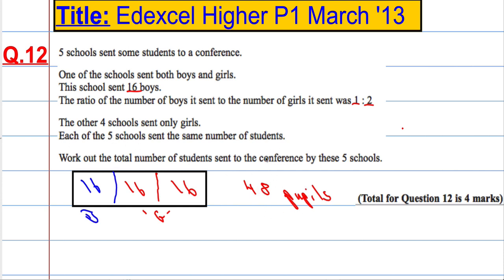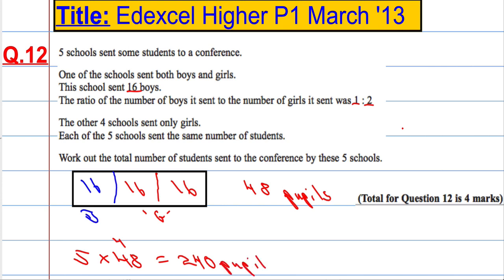Work out the total number of students sent to the conference by these five schools. Simply, all I need to do is 5 times 48 — 5 schools, they all sent the same number of pupils. 5 eights are 40, carry 4, 5 fours are 20 and 4 is 240.